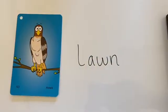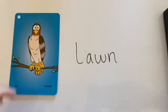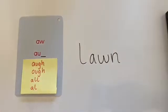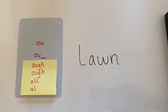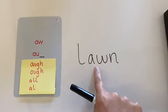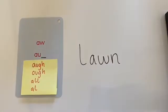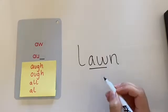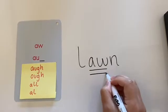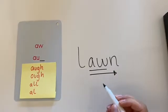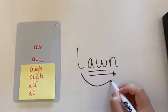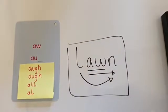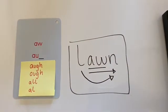Hey second grade. So we've been working with the aw sound. I'm going to flip over my card to see my different spellings and find the spelling pattern. I see A-W, and I know that makes aw. We're going to slide right — aw, aw — add the beginning sound. Lawn. Say it fast: lawn. My word is lawn.